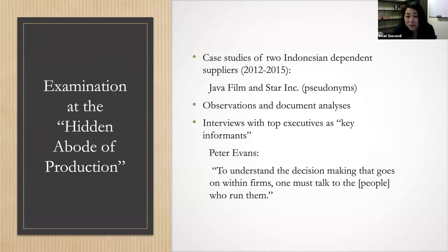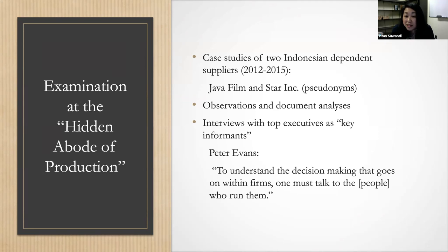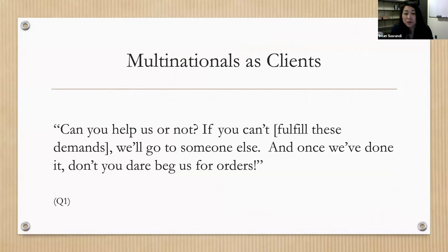If you want to be critical of capital, first you have to understand how capital works — how they think and what their logic is. Studying suppliers in the global south is interesting and important because they manage both relationships: on one hand with their multinational clients, and on the other hand with their workforce. The exploitation happens in their factories precisely because they have to fulfill the demands given by multinationals — this is what I mean when I say we have to examine the hidden abode of production, referring to Marx's Capital Volume One.